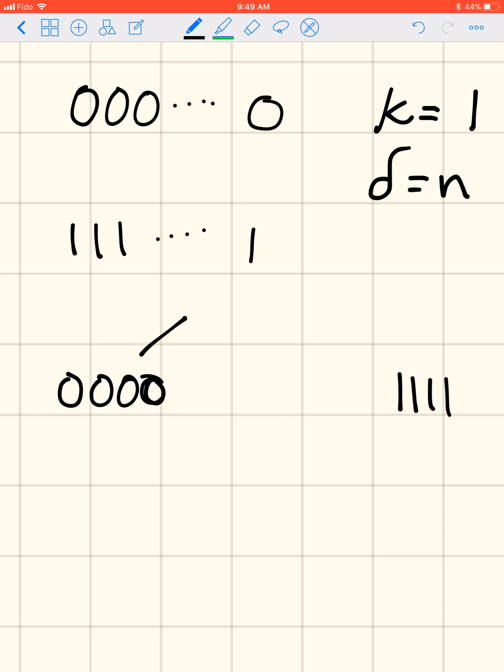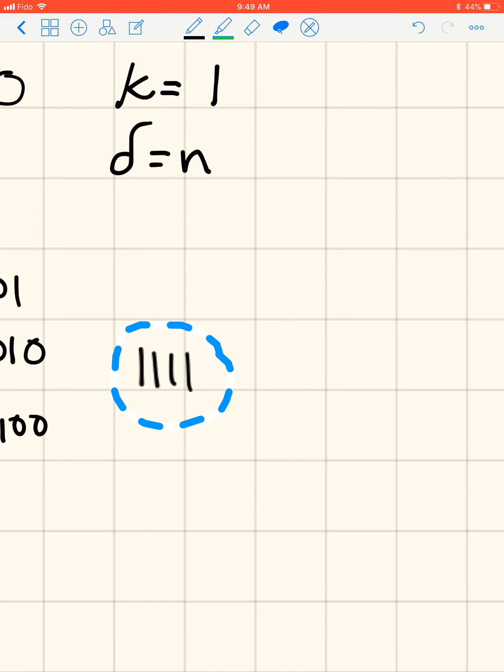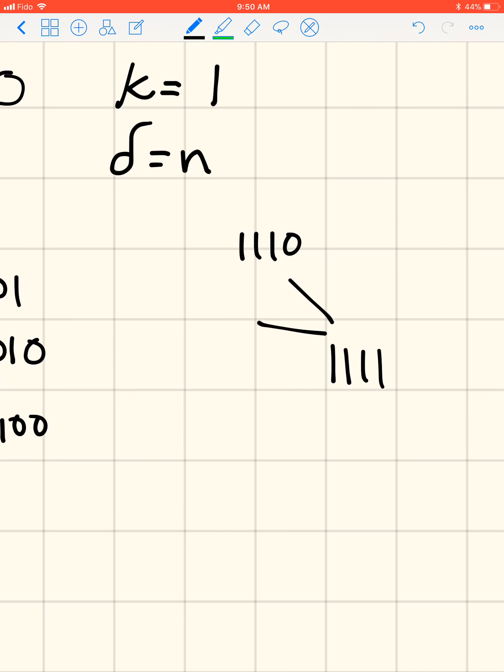There are 4 code words that are pretty obviously, if we receive these words, we're pretty sure that what was meant was 0000. And if we receive any of these words, we're pretty sure that what was meant was 1111, and we correct accordingly.